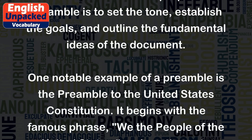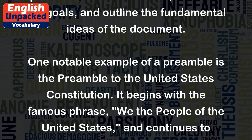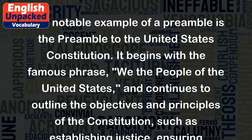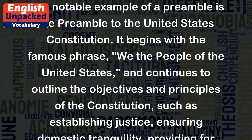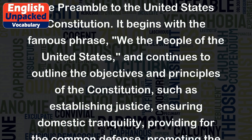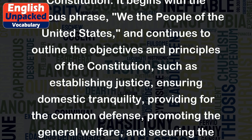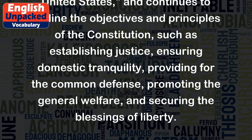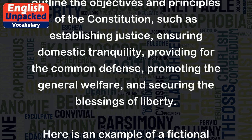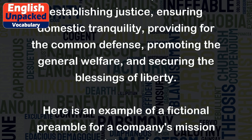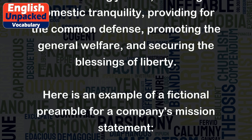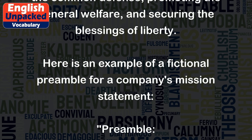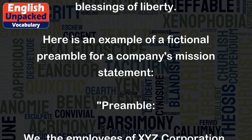One notable example of a preamble is the Preamble to the United States Constitution. It begins with the famous phrase 'We the people of the United States,' and continues to outline the objectives and principles of the Constitution, such as establishing justice, ensuring domestic tranquility, providing for the common defense, promoting the general welfare, and securing the blessings of liberty.